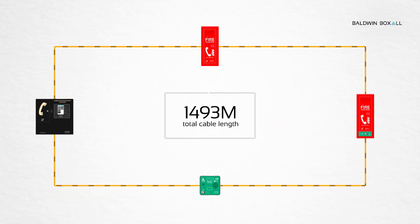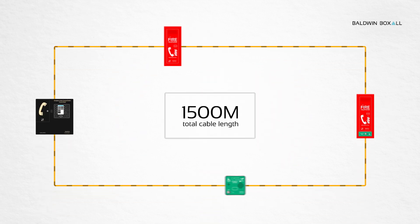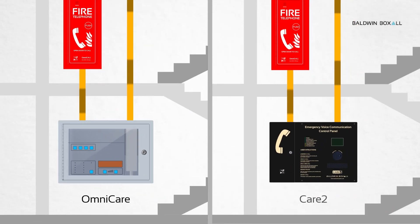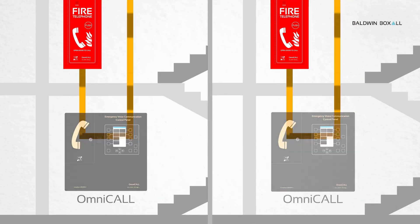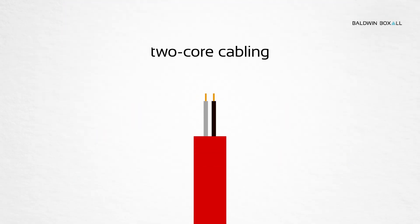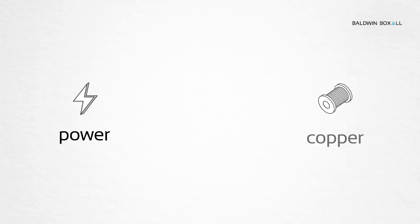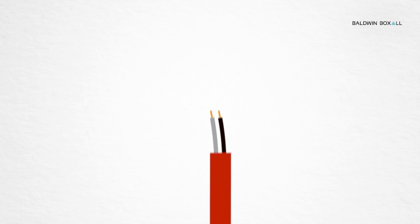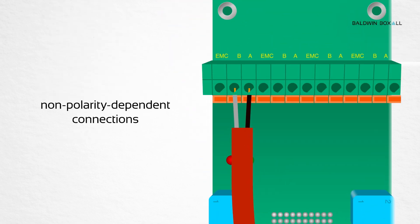Flexible cable length for any application. Retrofit with existing OmniCare or Care2 systems using low-cost two-core cabling, reducing power consumption and copper by up to 50%. Nonpolarity-dependent connections simplify installation, saving time and money.